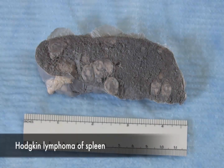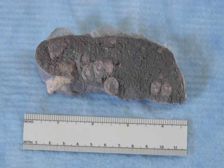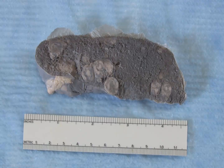This is a coronal section of spleen showing characteristic features of Hodgkin lymphoma. Hodgkin lymphoma typically presents as painless lymphadenopathy of a single lymph node. The disease spreads in an orderly, contiguous fashion through the chain of lymph nodes, then to spleen and liver.